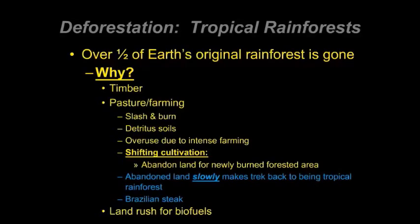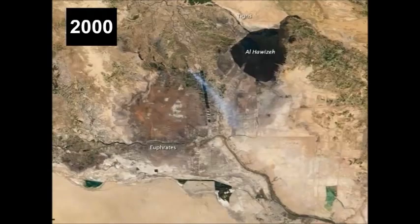Here you see the result of slash and burn — clearing the forest, burning it, then moving on to the next area. We can see the process of deforestation more at the ground level rather than just aerial views of change over time.